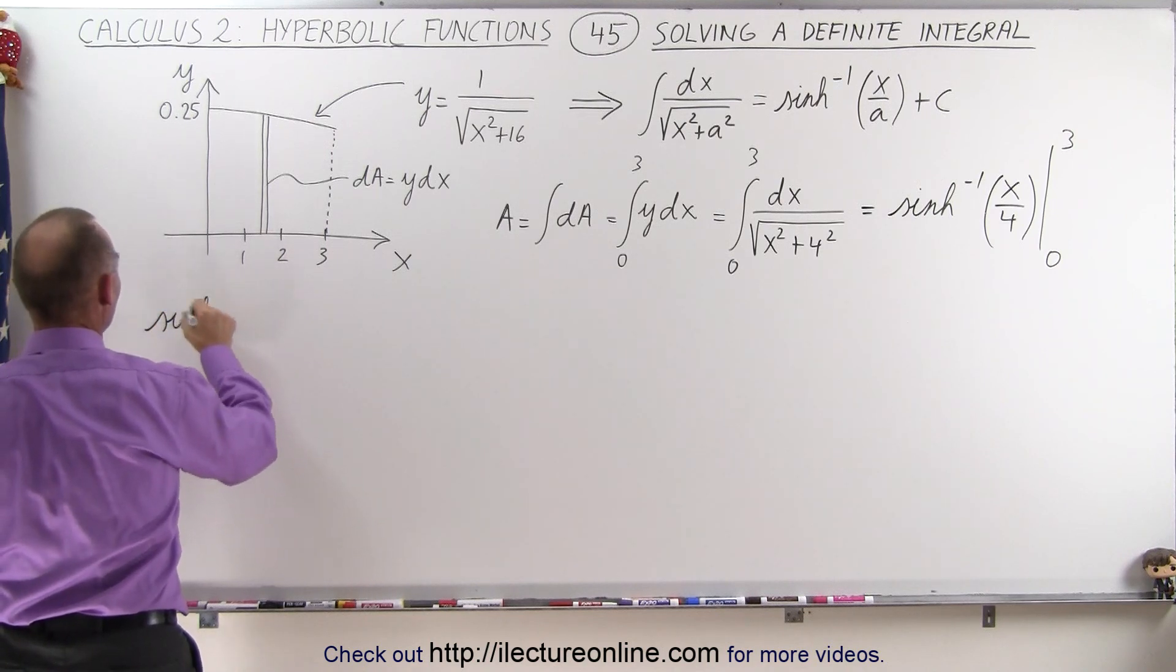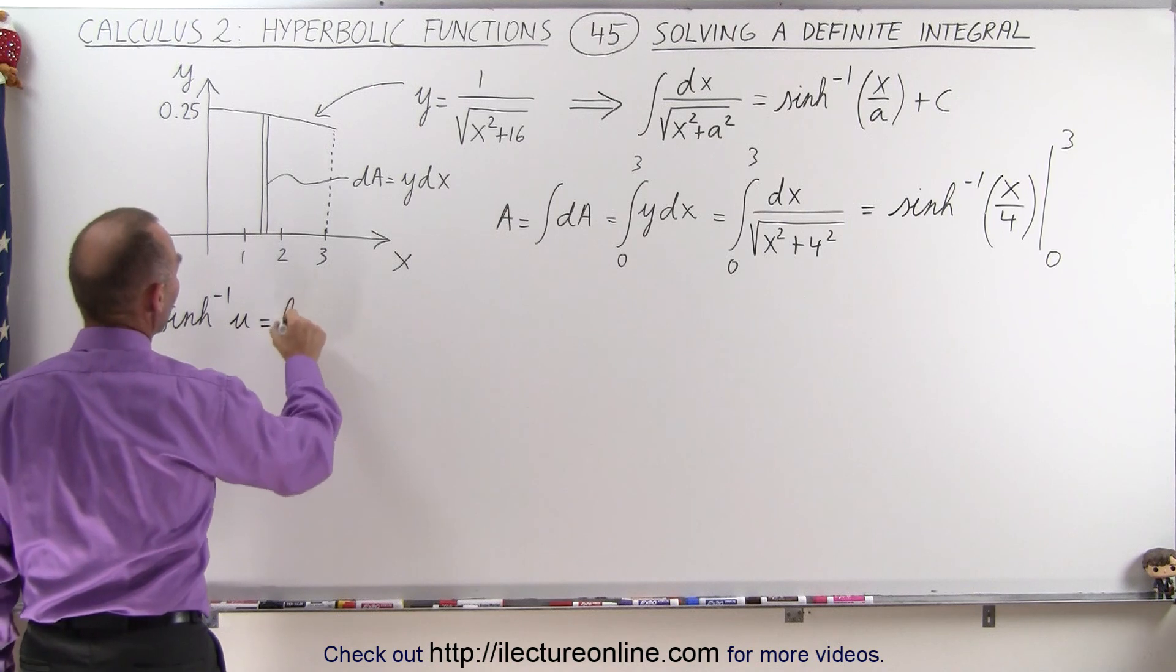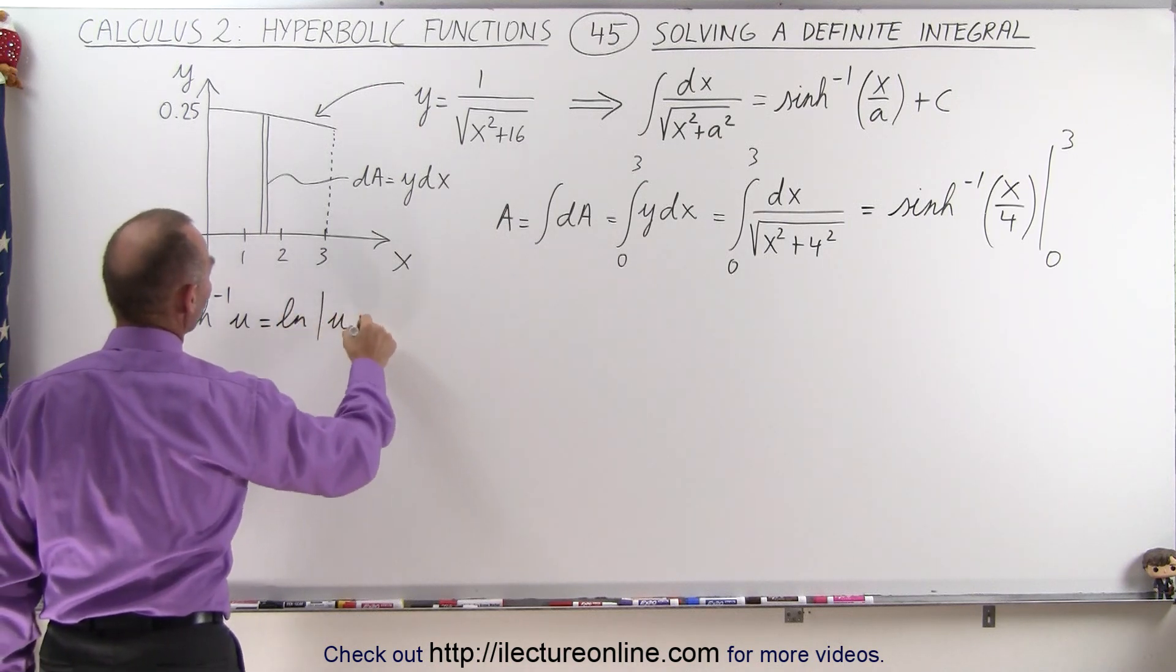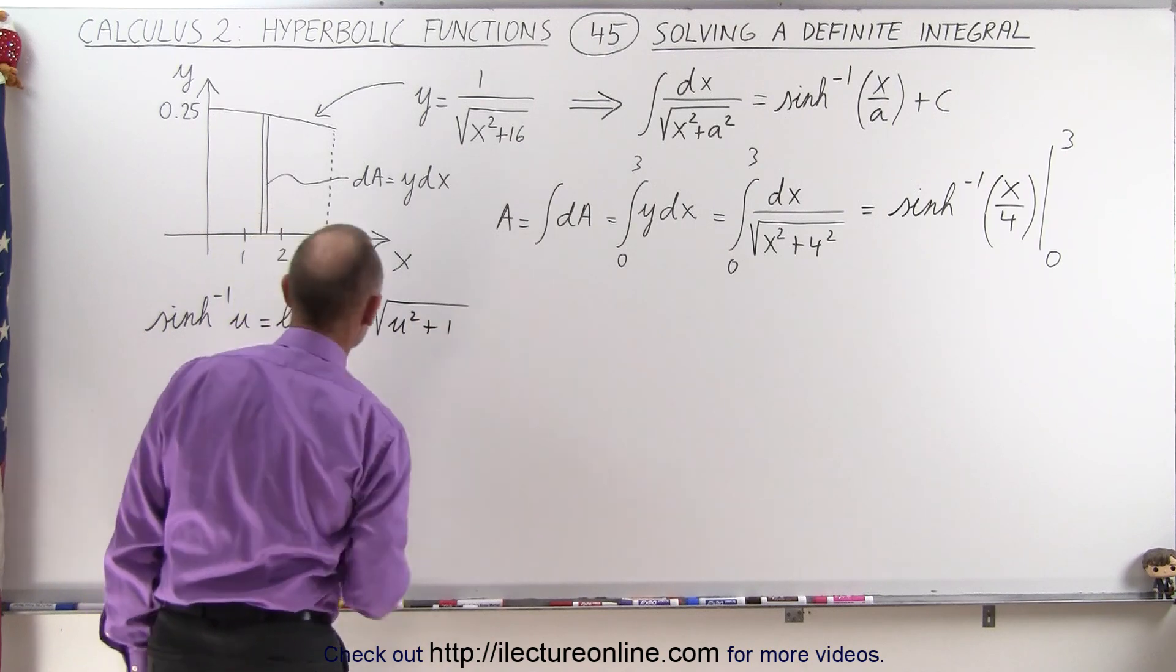So the general equation of the inverse hyperbolic sine looks like this. So we have the inverse hyperbolic sine of, let's say, u is equal to the natural log of u plus the square root of u squared plus 1.